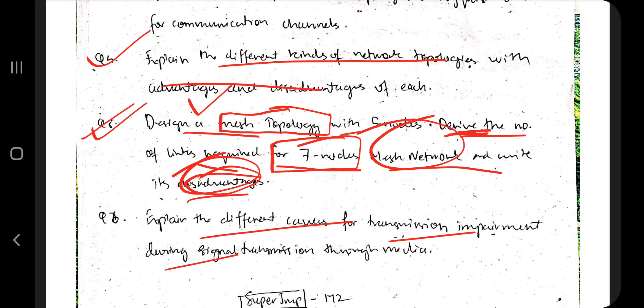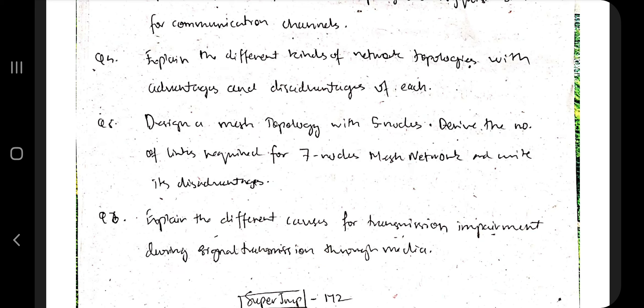The last question covers the different causes of transmission impairment during signal transmission through a medium. Transmission is not straightforward — many factors affect it. A signal from the source may not reach the destination, or it may reach with error values, or data may be lost in between. You need to mention all those factors, what noise is inserted, and how to denoise it. These are the super important questions for Module 1 — make sure to hit the like button, subscribe, and thank you so much for watching. See you in the next one.